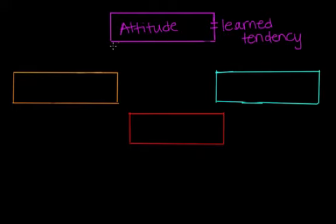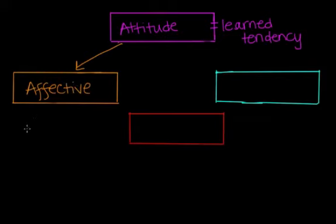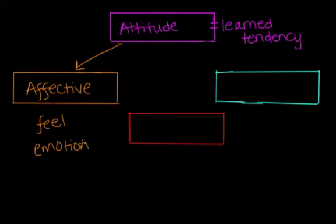In the first component, we have the affective component, and this is also known as the emotional component. We may feel or have emotions about a certain object or subject or topic, and this is what's going to shape our attitude. For example, I can show an emotional attitude by saying, I am scared of spiders. The word scared indicates an emotion, and that's going to shape our attitude of spiders.